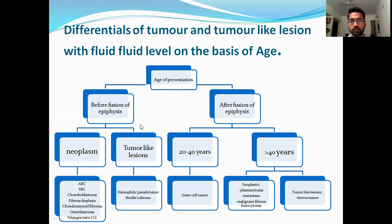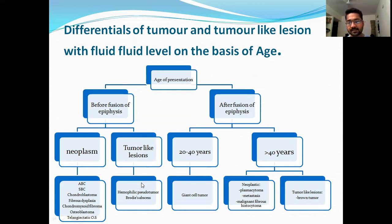Based on age, we can divide into two types: those which occur before the age of 25 and those which occur after. Before age 25, in the neoplasm category: aneurysmal bone cyst, simple bone cyst, chondroblastoma, fibrous dysplasia, chondromyxoid fibroma, osteoblastoma, and telangiectatic osteosarcoma. In tumor-like lesions: hemophilic pseudotumor and brown tumor. After age 25, divided into 20–40 years — most likely giant cell tumor — and after 40 years: plasmacytoma, metastasis, and MFH in the malignant category; and brown tumor in tumor-like lesions.